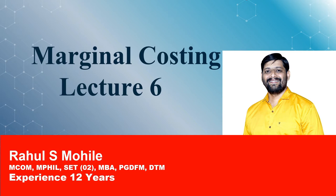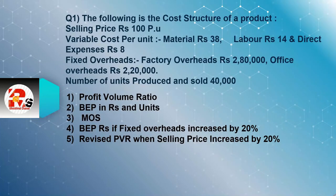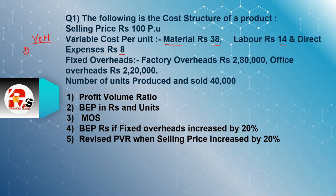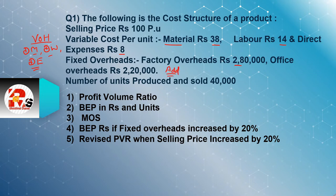This is lecture number 6 of marginal costing. Question number 1: the following is the cost structure of a product. The selling price is Rs. 100 per unit. Variable cost per unit: direct material is Rs. 38, labor is Rs. 14, and direct expenses is Rs. 8. In variable overheads we have three points: direct material, direct wages, and direct expenses. Fixed overheads have two points: factory overheads and office overheads. Number of units produced and sold is 40,000.